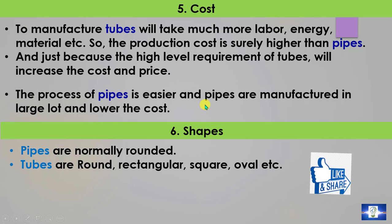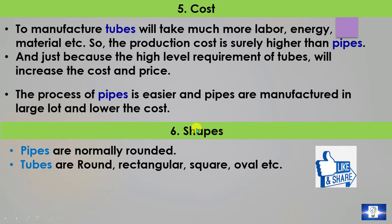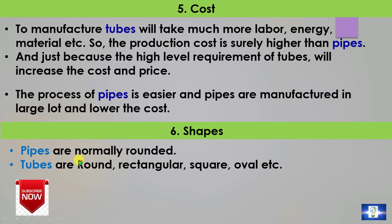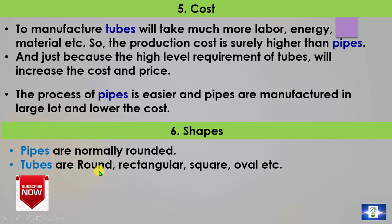Point 6: Shape. In the market, pipes are normally round. But tubes come in different shapes such as round, rectangular, square, oval, etc.